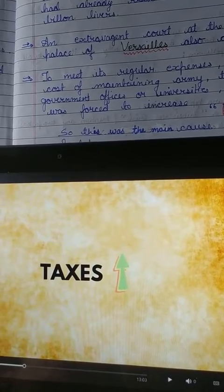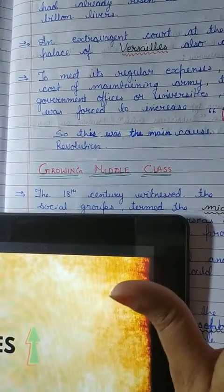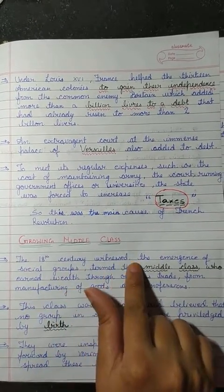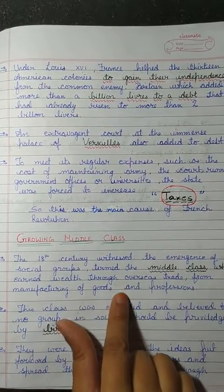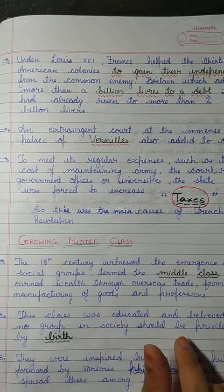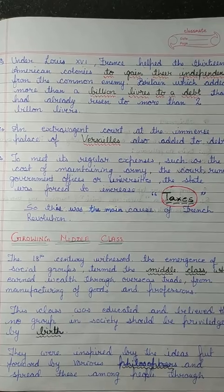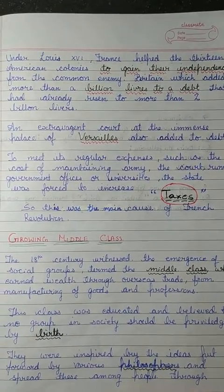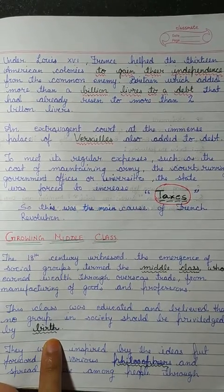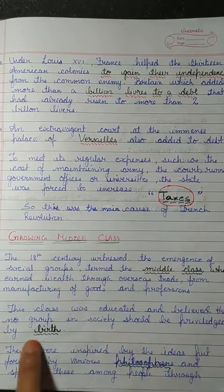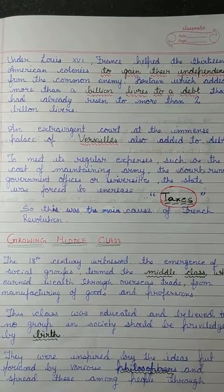It was inevitable that the French Revolution took place. Another reason was the growing middle class. The 18th century witnessed the emergence of social groups termed the middle class, who earned wealth through overseas trade, manufacturing of goods, and professions. This class was educated and believed that no group in society should be privileged by birth — that privileges should go to those who worked, were educated, and had the qualities.